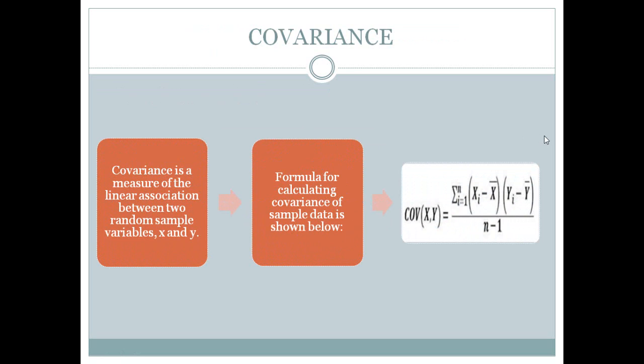Covariance is a measure of the linear association between two random sample variables x and y. The formula for calculating covariance of sample data is shown as follows: covariance of x,y is the summation of the deviations of values of x from the mean of x into deviations of values of y from the mean of y, divided by n minus 1 observations, where n is the number of sample data points.